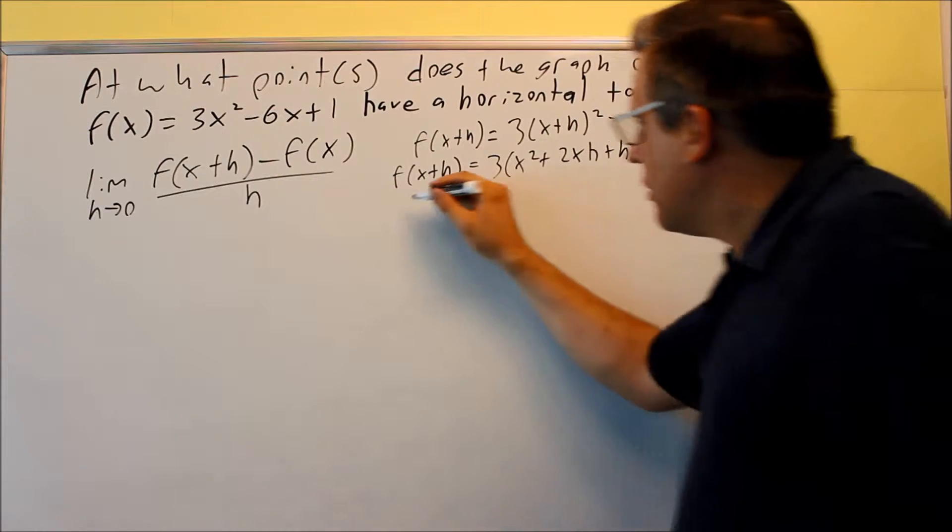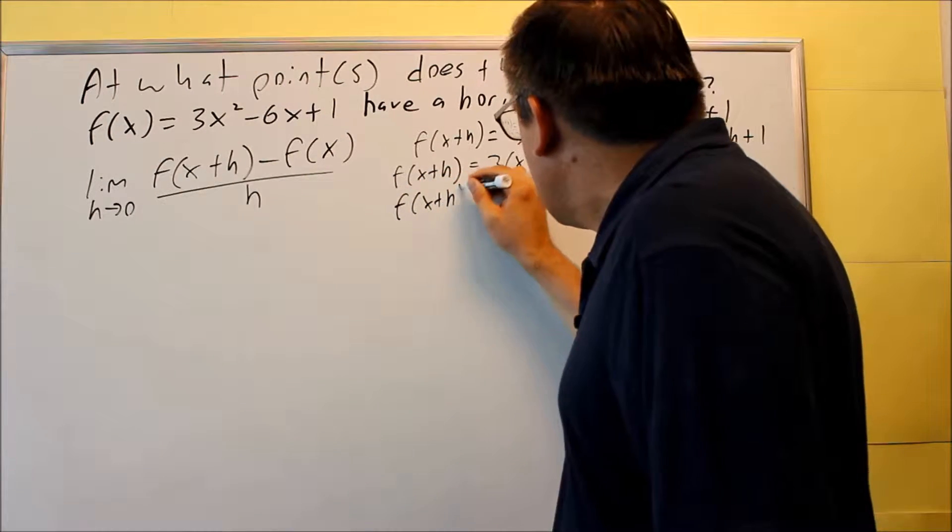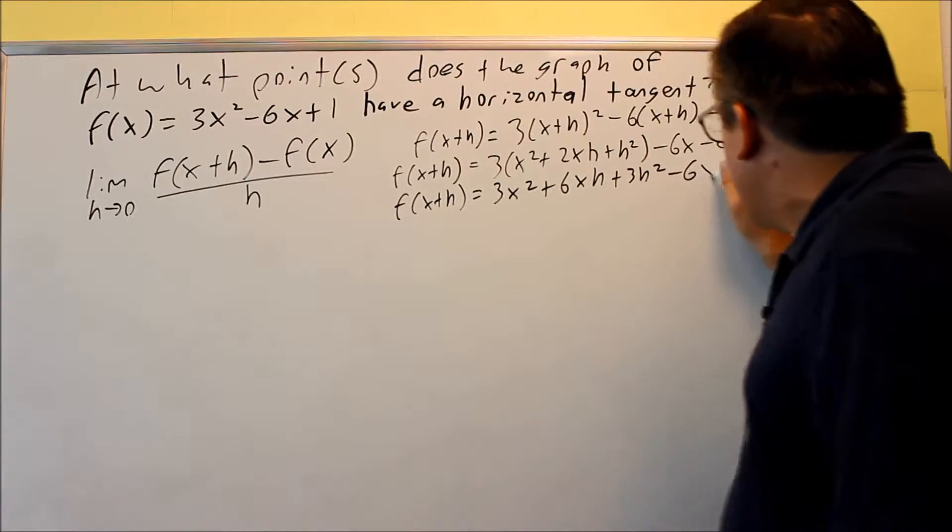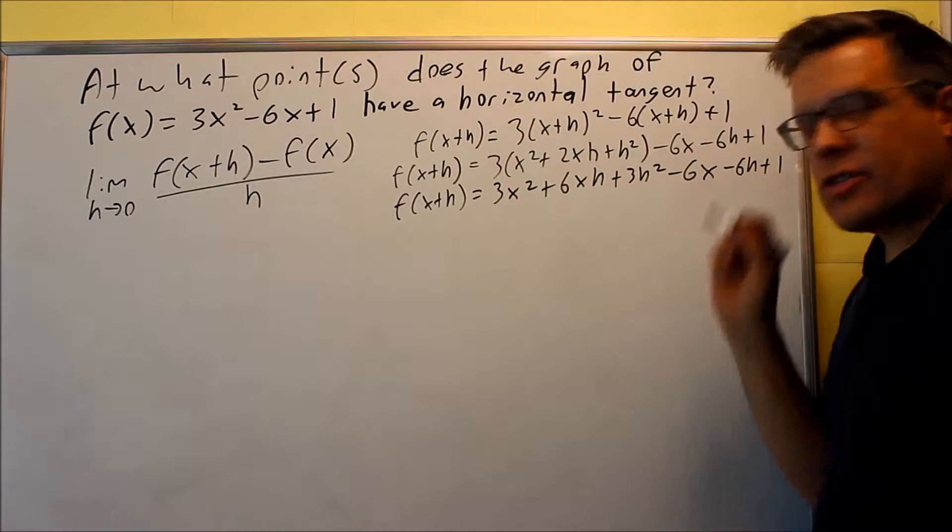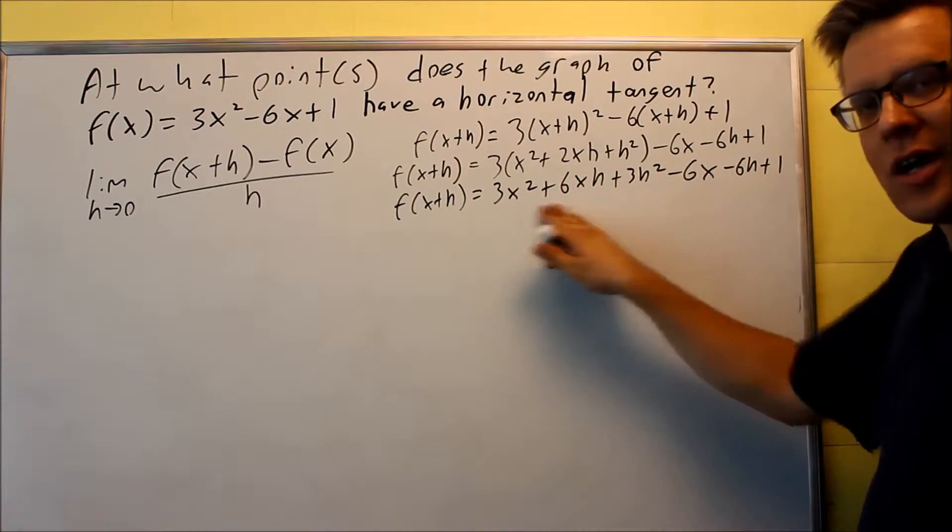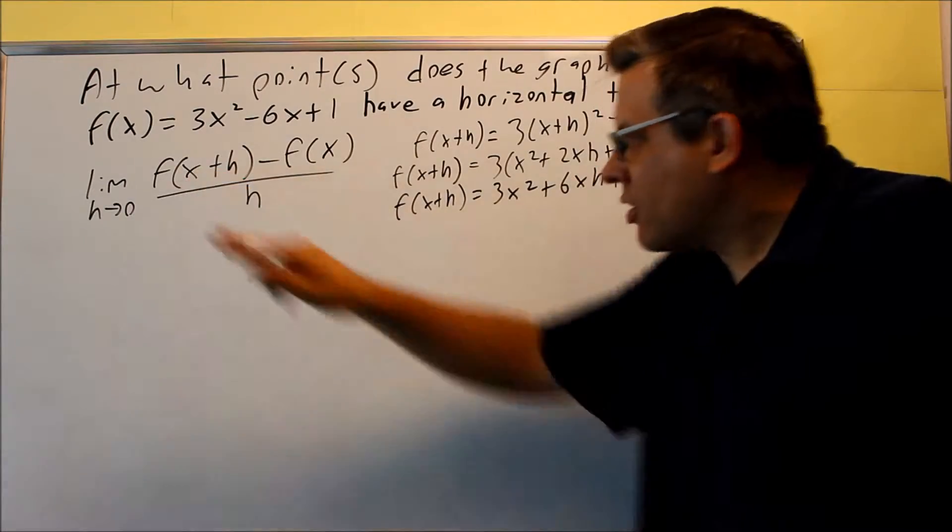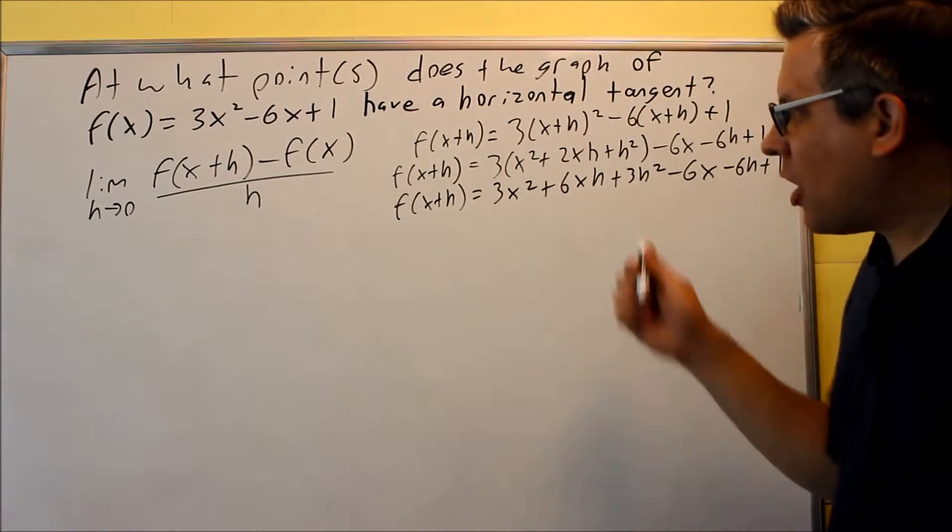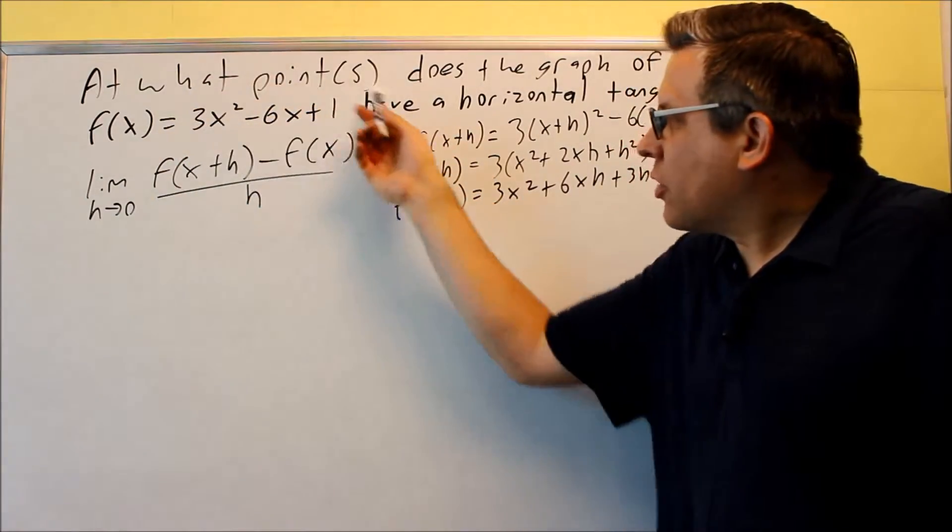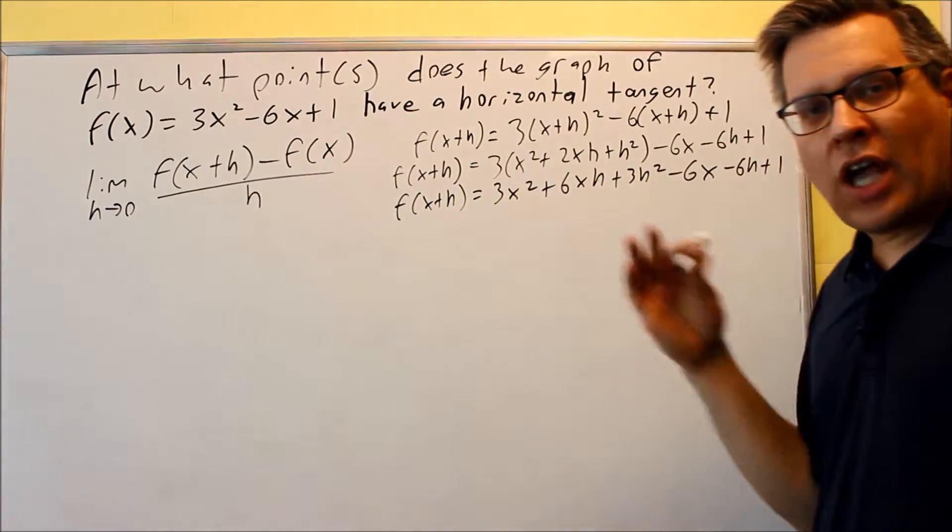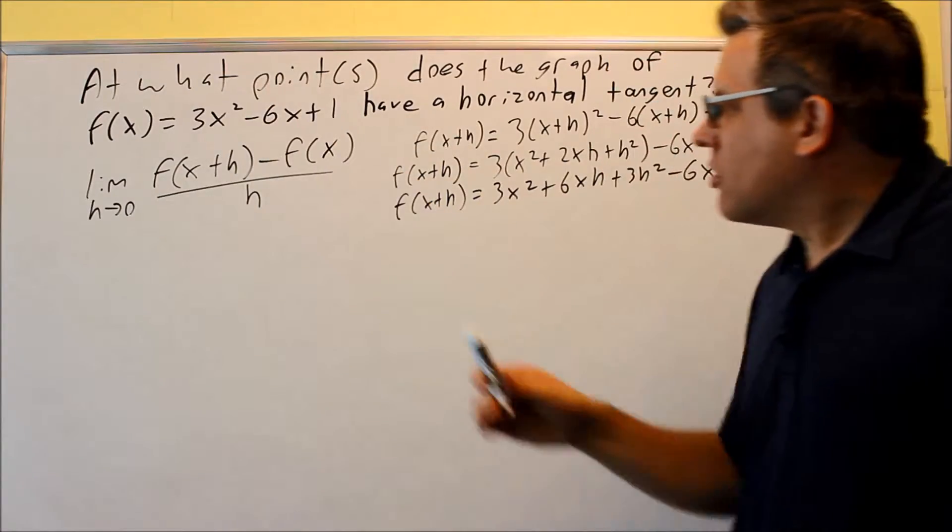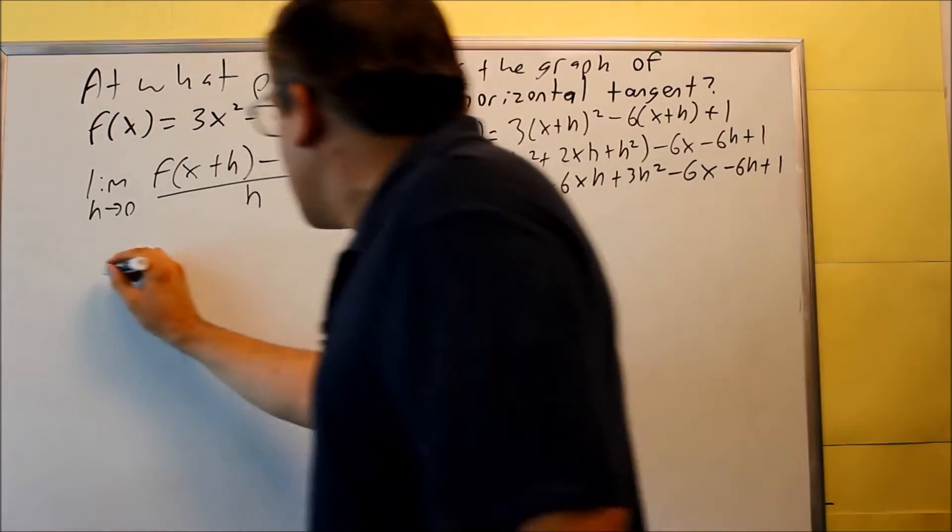Next, I'll expand the 3 into that. 3x², 6xh, 3h², and then I have the rest of it. There's no like terms. Nothing more I can do to simplify this. So I'm ready now to put this whole entire thing in place of the f(x + h). I'm also going to replace the f(x) with the formula, because since we're given that, we can put that in. This time we don't have an actual y value, just our function. Let's put that all together.